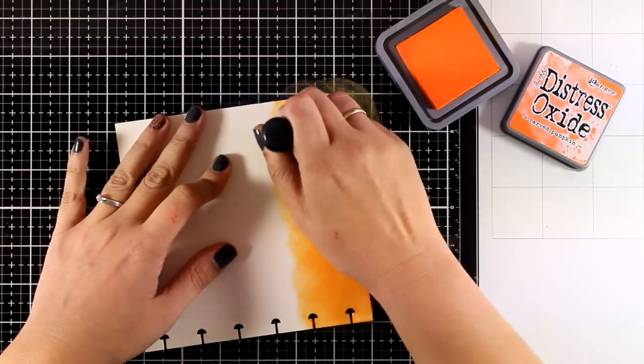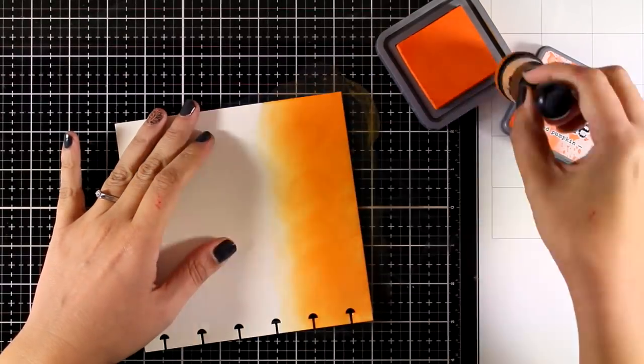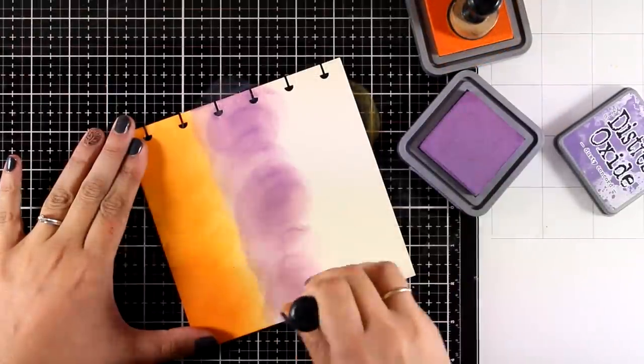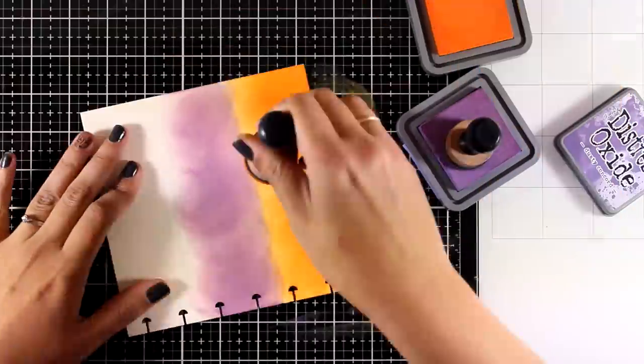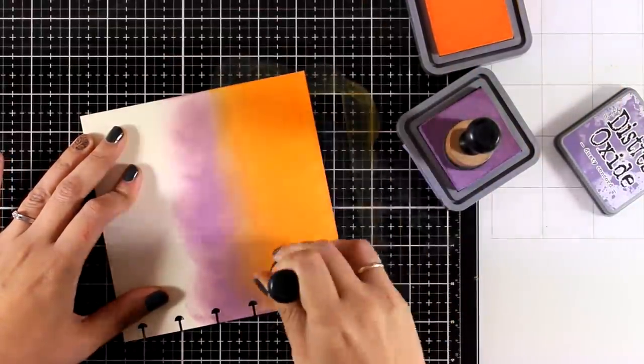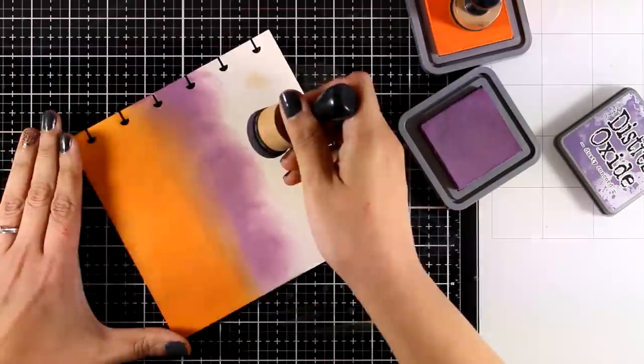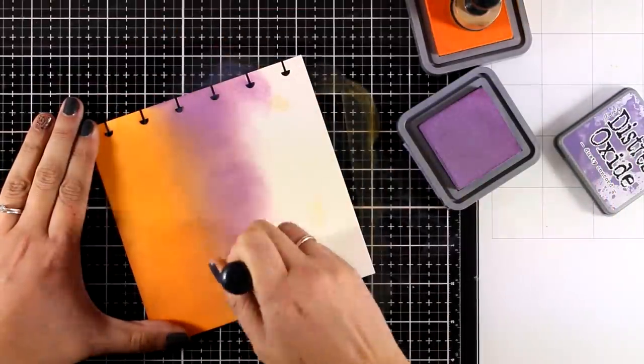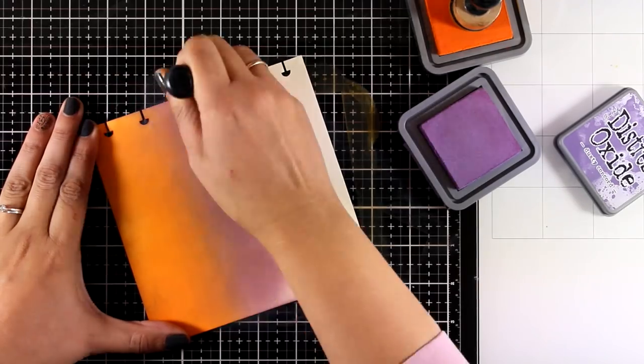I will use my blending tool and apply distress oxide ink all over my page. I'm starting with carved pumpkin, I will move on to dusty concord. You will see that it's really easy to blend distress oxide ink on top of this paper and this is exactly the reason why I choose to use this for my art journal.